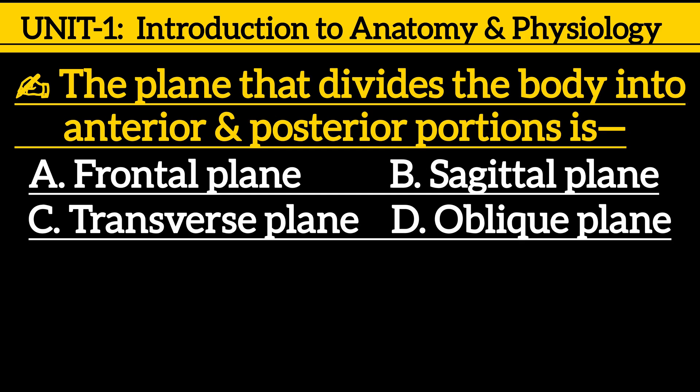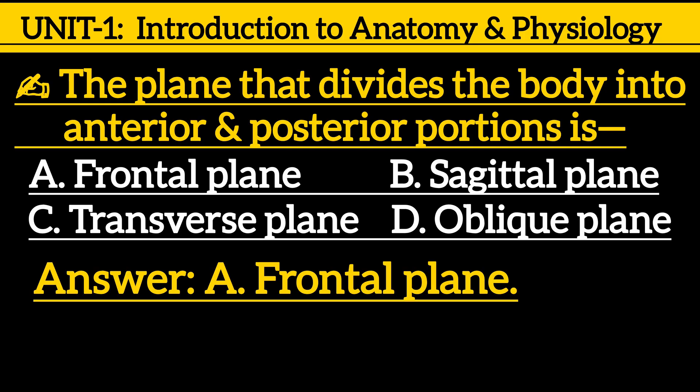Next one: The plane that divides the body into anterior and posterior portions is — option A: frontal plane, option B: sagittal plane, option C: transverse plane, option D: oblique plane. The correct answer is option A: frontal plane.